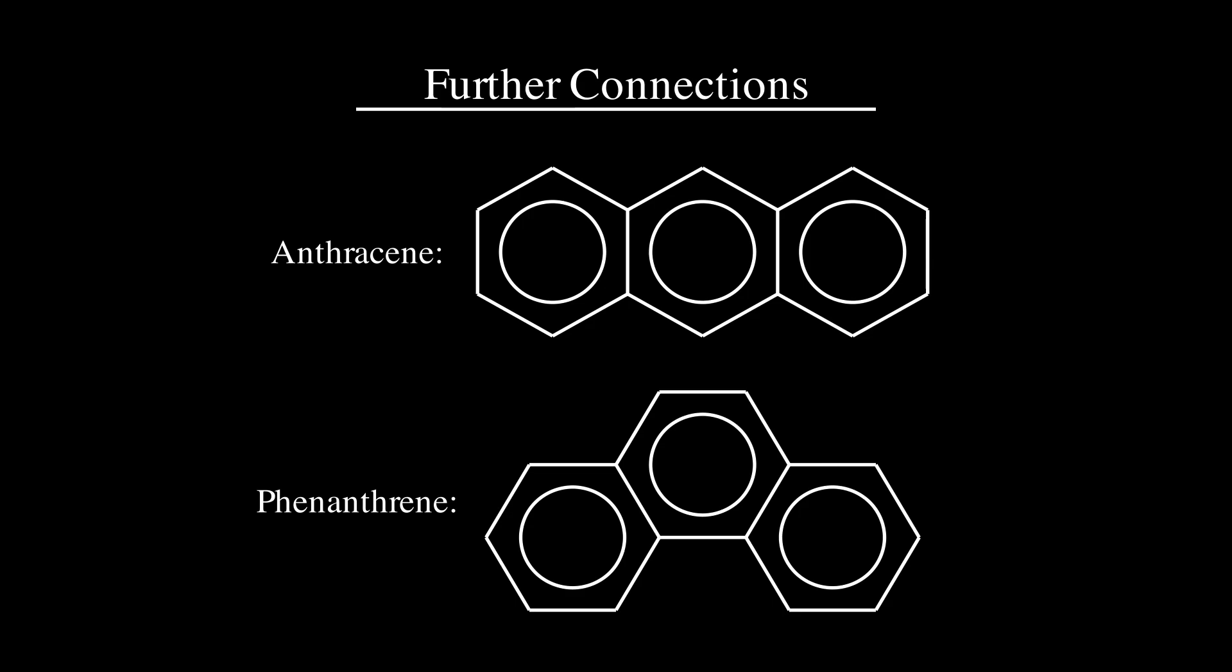For the sake of clarity, these diagrams do not explicitly write out each carbon and hydrogen. Each vertex in the diagram contains a carbon, and hydrogen is implied to be attached to that carbon if it's necessary to complete its octet.